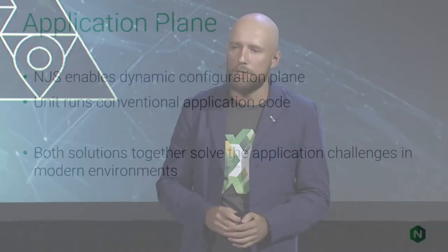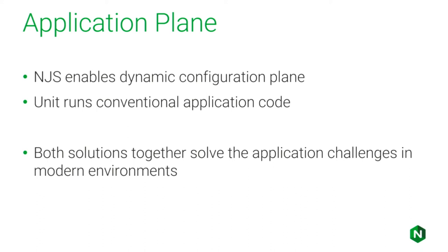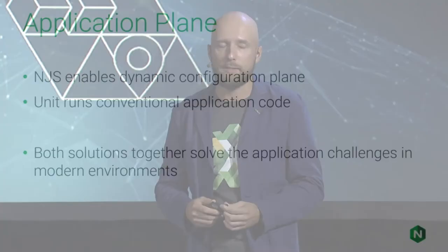Let's recap what we learned. When we look at the application plane, it's not as simple as just running your code and forgetting about it. There are various areas of applications and various levels in the infrastructure where different parts of code might be run, and different kinds of developers and operations people might choose the correct area to run their code. A smaller snippet of code related to authentication, request processing, or request modification can simply be run by NJS in the configuration plane, while a larger conventional application — whether a microservice app or a monolith — can be run dynamically using NGINX Unit.